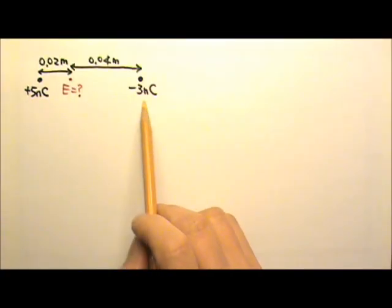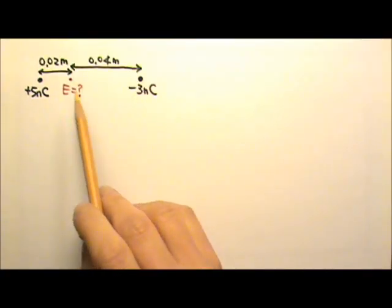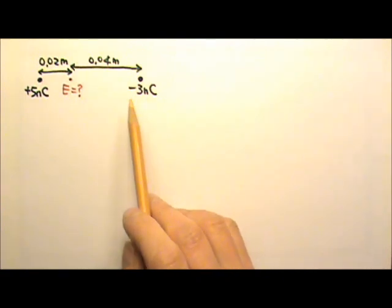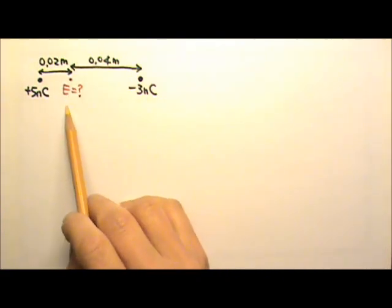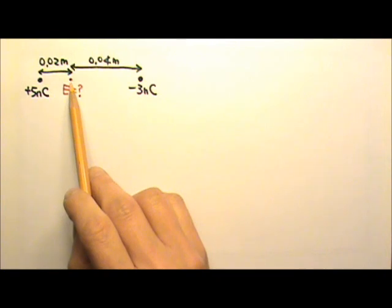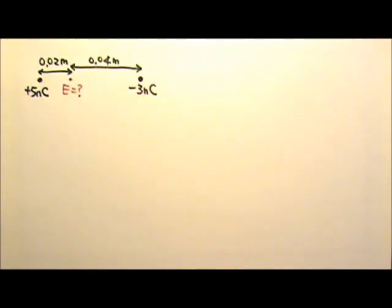There are two point charges, positive 5 nanocoulombs and negative 3 nanocoulombs. Find the magnitude and direction of the electric field at this location between the two point charges.